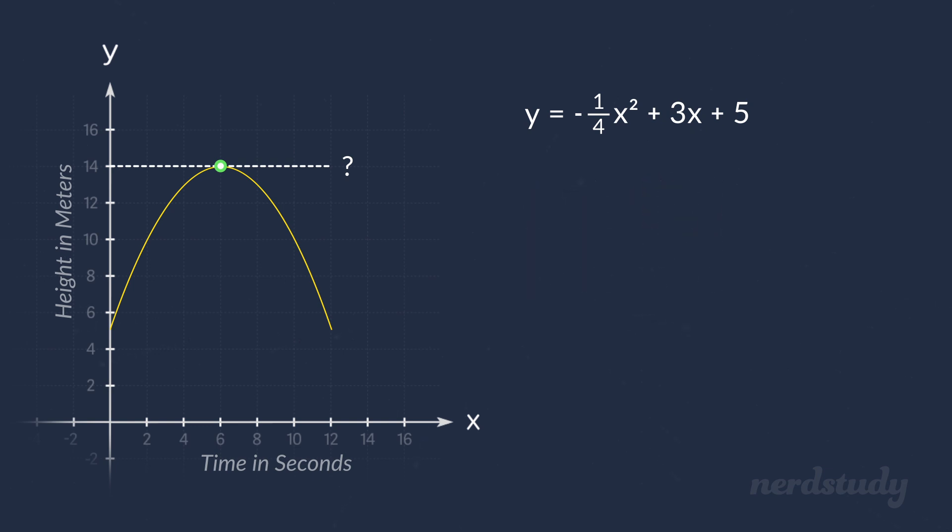All right, so let's try it. First, we realize that our a is not equal to 1. So we start by factoring out negative 1 over 4 from the equation. If we factor correctly, then we should end up with this.